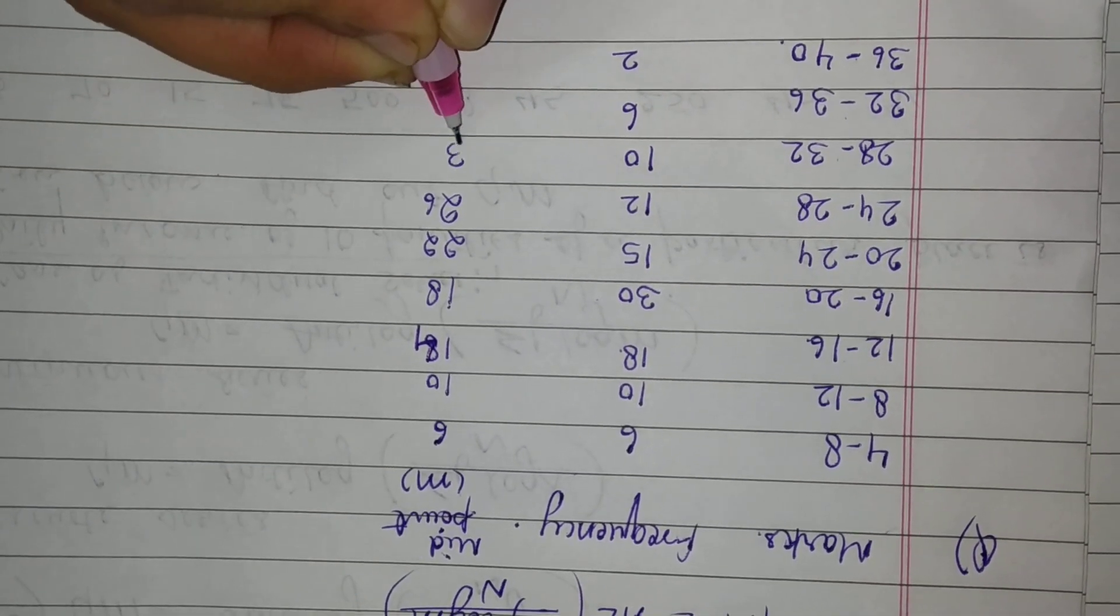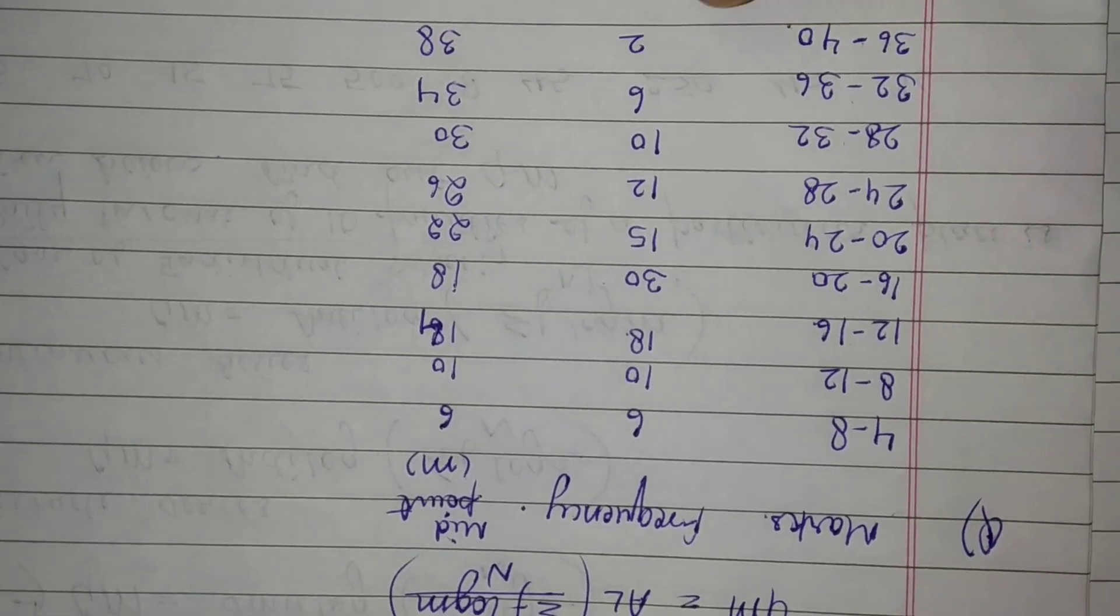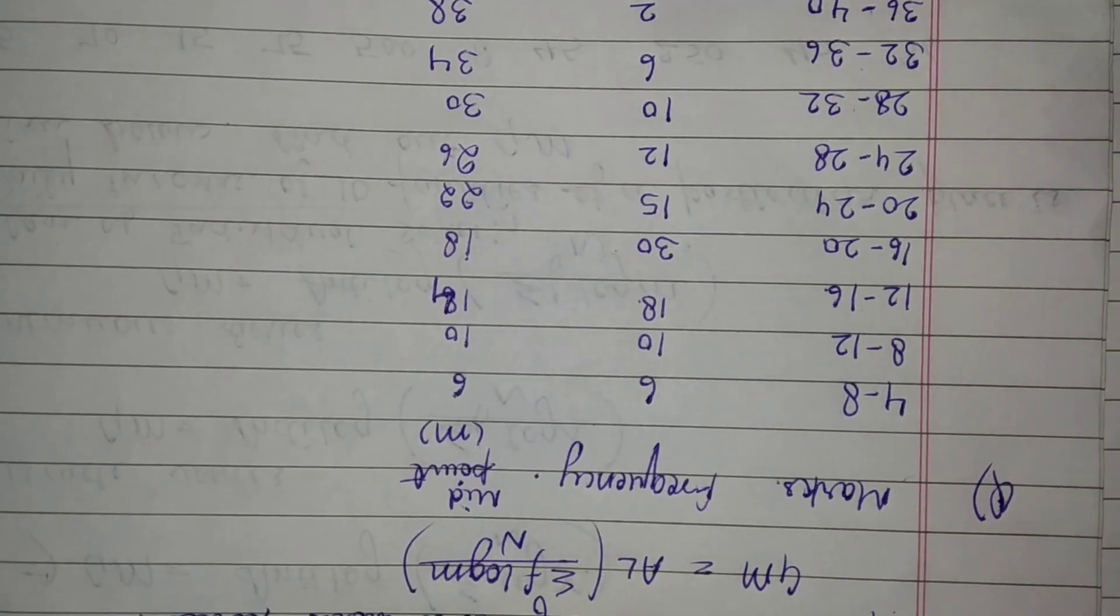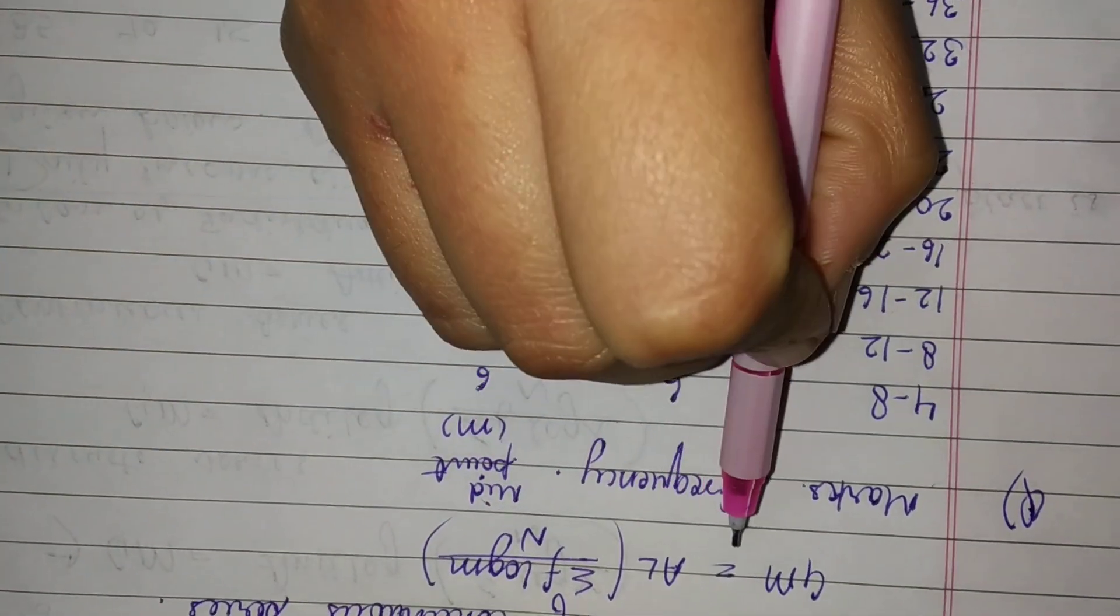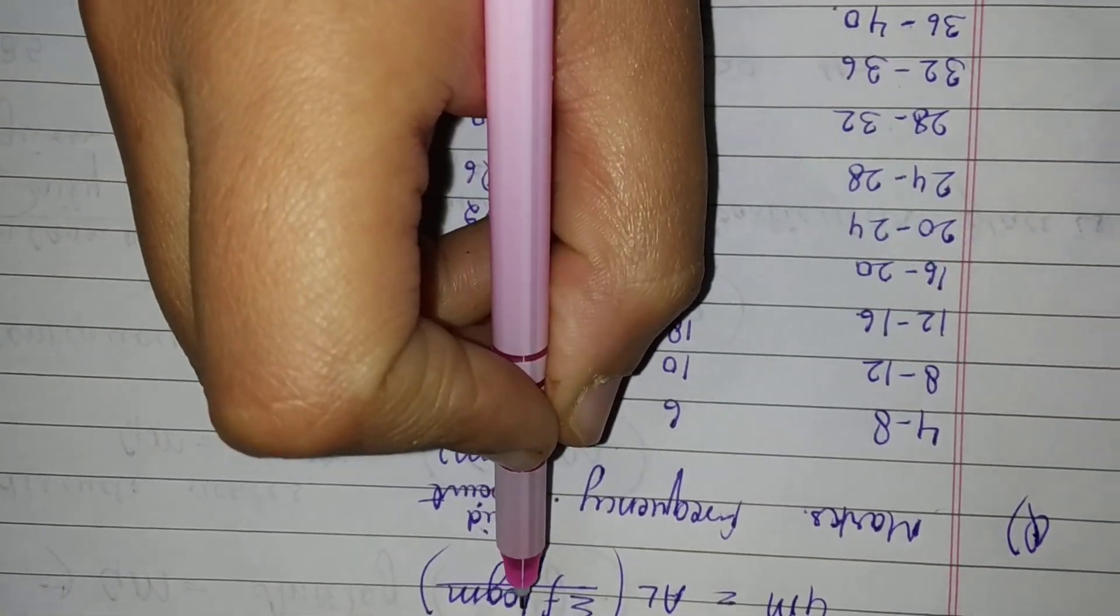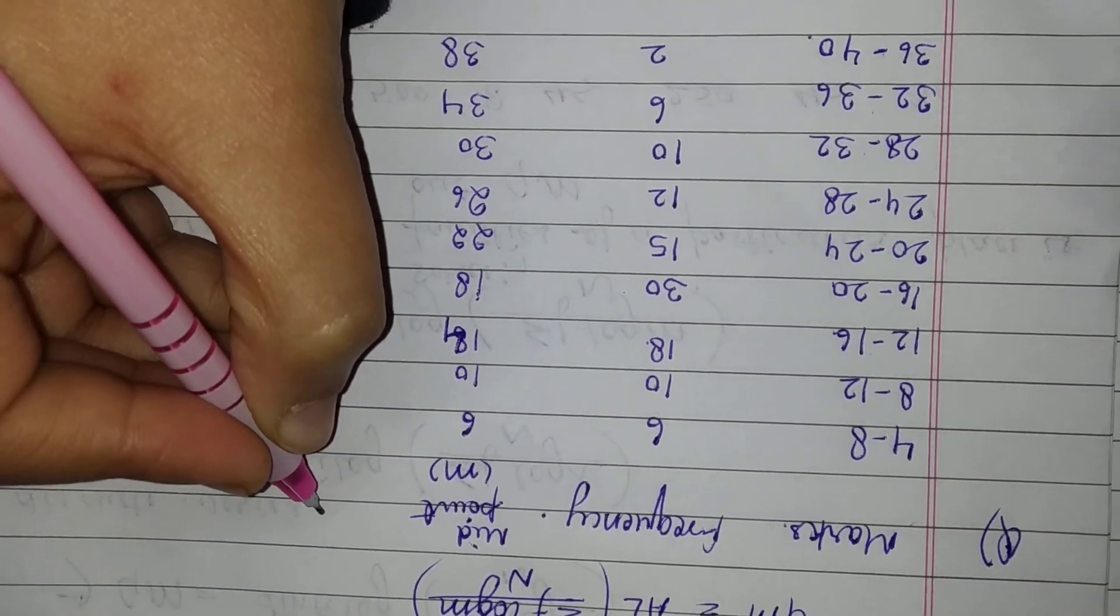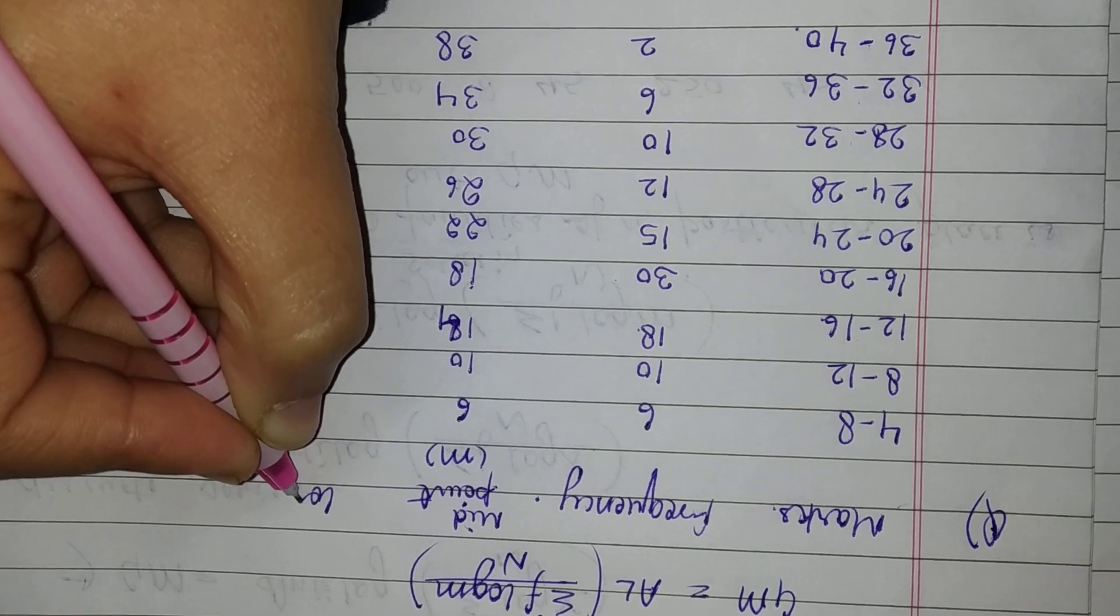Now we have frequency. The formula to calculate geometric mean is antilog of sigma f log m divided by n. This is m, now I will calculate log m.